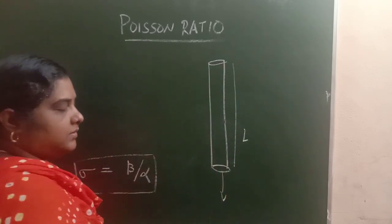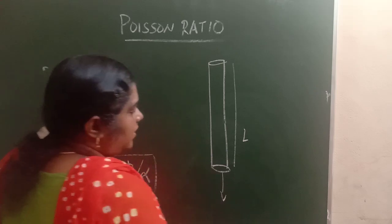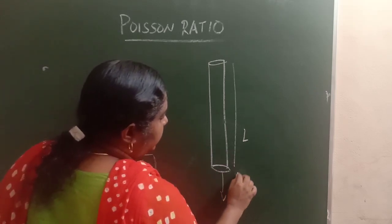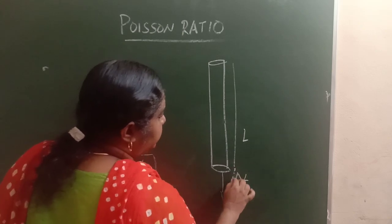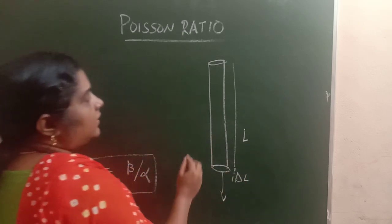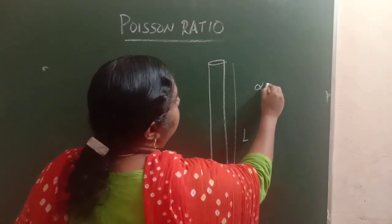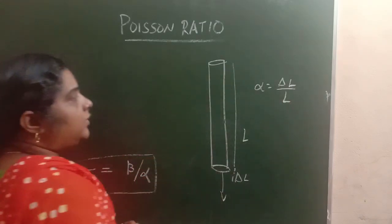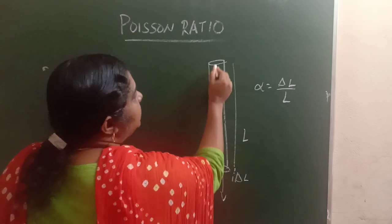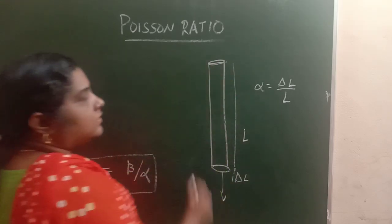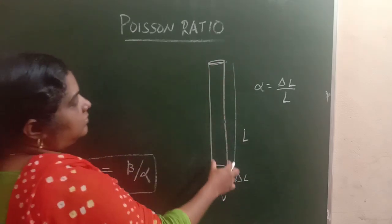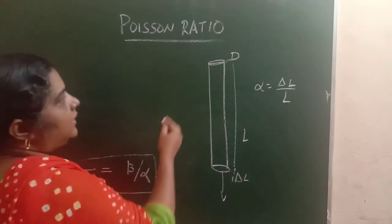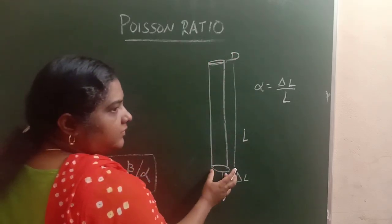After applying a longitudinal force or stress, the longitudinal strain is delta L by L, so alpha equals delta L by L. Now, for beta, let the diameter of the rod be D. Then there will be contraction in the diameter.